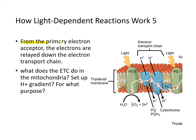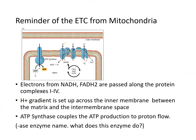From the primary electron receptor, the electrons are relayed down the electron transport chain — again, very similar to what happens in mitochondria. What does the electron transport chain do in mitochondria? It sets up the proton gradient — to produce the proton motive force to produce ATP.